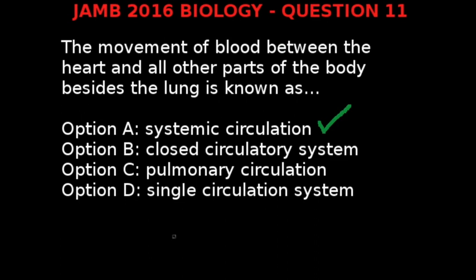The correct answer is systemic circulation. Systemic circulation is the part of the cardiovascular system which carries oxygenated blood away from the heart to the body and returns deoxygenated blood — blood without oxygen — back to the heart. This deoxygenated blood is then transferred to the lungs for oxygenation in what we know as pulmonary circulation.